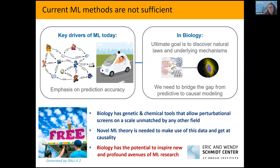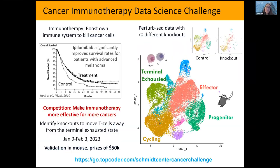One way is how we can actually invite more machine learning researchers into biology. There are a lot of people who would want to work on more important problems than recommender systems or online advertising, but just don't have access to getting into these important biomedical questions.